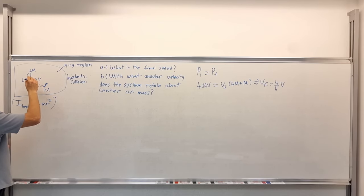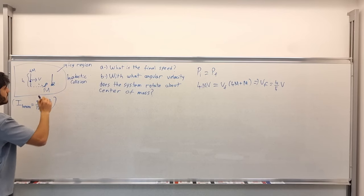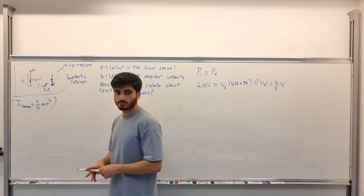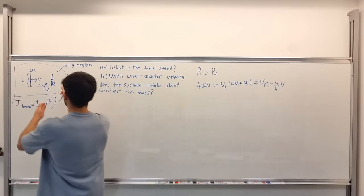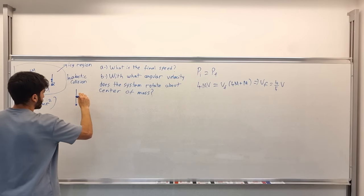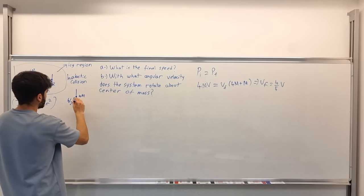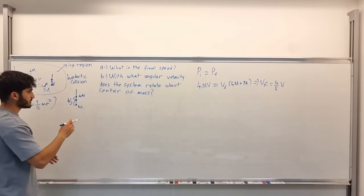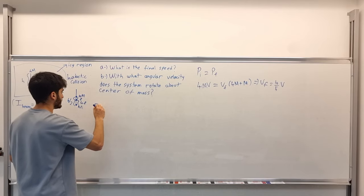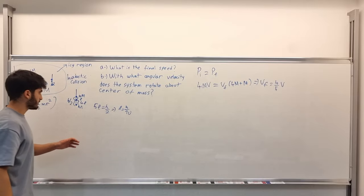The center of mass is located between the beam and the man. When they stick together, we need to find the position of the center of mass vertically. The beam's center of mass is at the middle of the beam and the man is at the end. We have 4m for the beam and m for the man, and the distance between their centers is h over 2. Setting up the equation, 5l equals h over 2, so l equals h over 10. We have found the center of mass position.